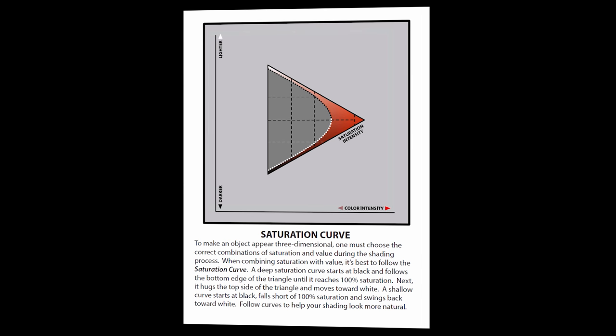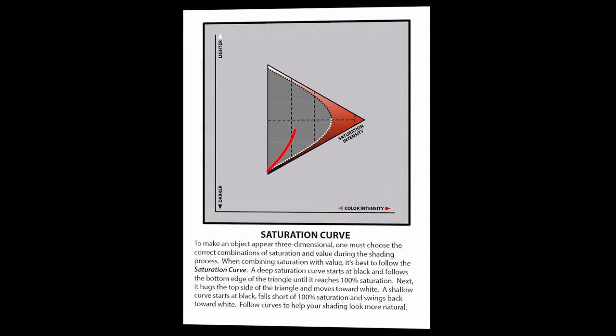Next, we'll talk about the saturation curve. To make an object appear three-dimensional, one must choose the correct combinations of saturation and value during the shading process. When combining saturation with value, it's best to follow the saturation curve. A deep saturation curve starts at black and follows the bottom edge of the triangle until it reaches 100% saturation. Next, it hugs the top side of the triangle and moves toward white. A shallow curve starts at black, falls short of 100% saturation, and swings back toward white. Follow these saturation curves to help your shading look more natural.